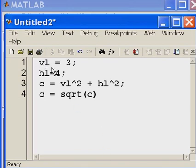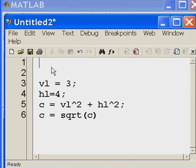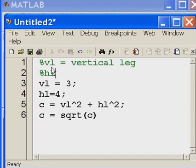So you know I'm going to forget this stuff. So let's put a little comment up here. Percent sign VL equals the vertical leg. And percent sign, whoops, percent sign HL equals the horizontal leg.